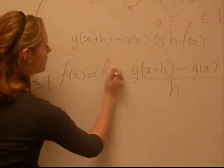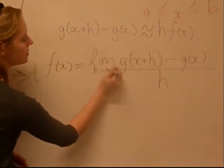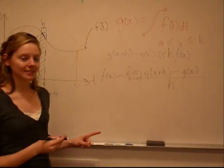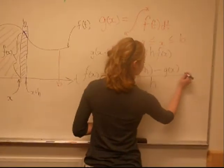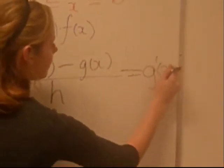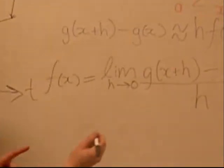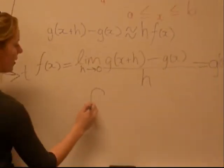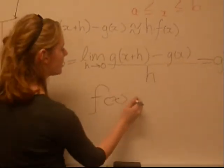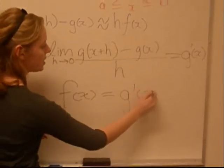the limit as h goes to 0. And this is the derivative of g of x. Therefore, f of x equals the derivative of g of x.